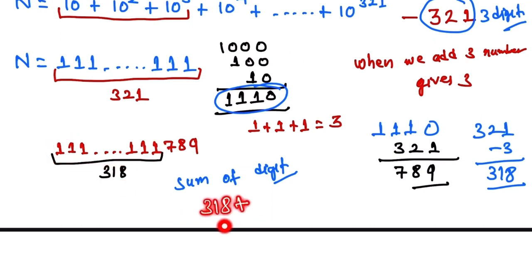and the last digit is 7 plus 8 plus 9 is equal to 24, so 318 plus 24 equals 342, and this one is our final answer.